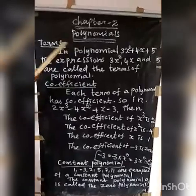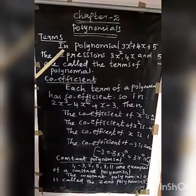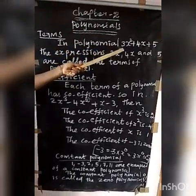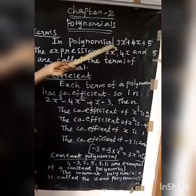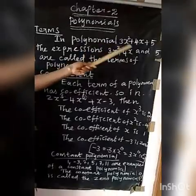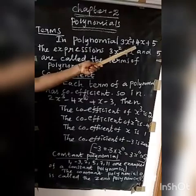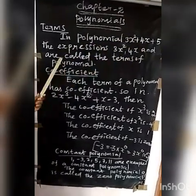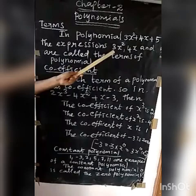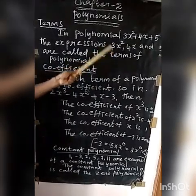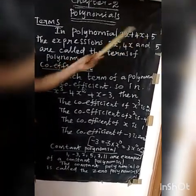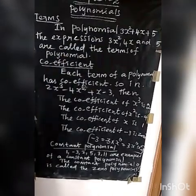Next, terms in a polynomial. For example, in 3X squared plus 4X plus 5, the expressions 3X squared, 4X, and 5 are called the terms of the polynomial. Each separate part — 3X squared, 4X, and 5 — is called a term of the polynomial.